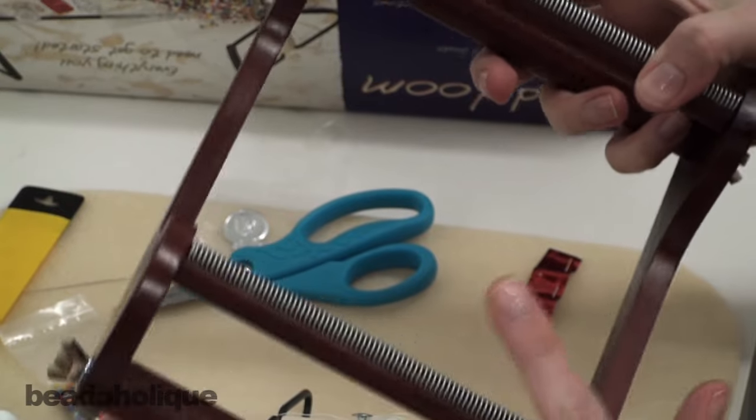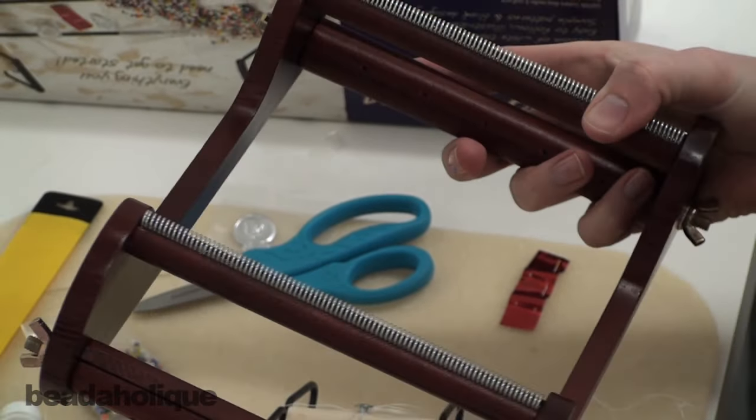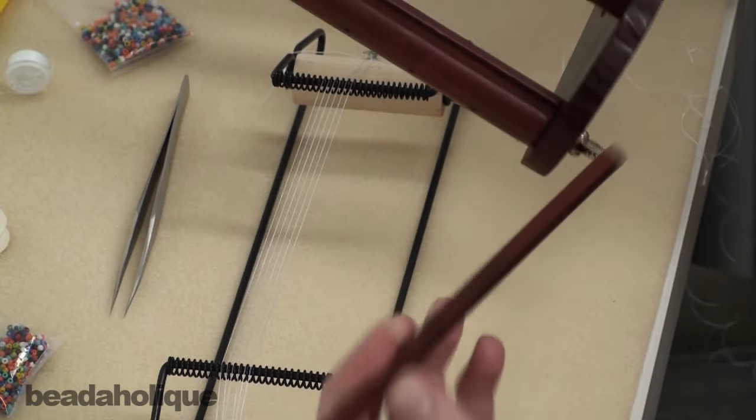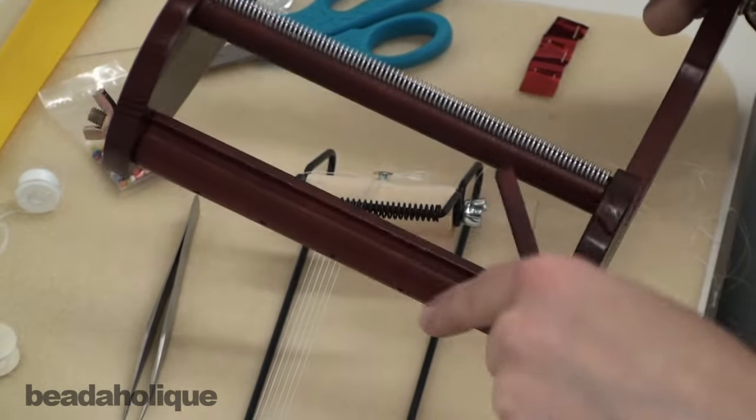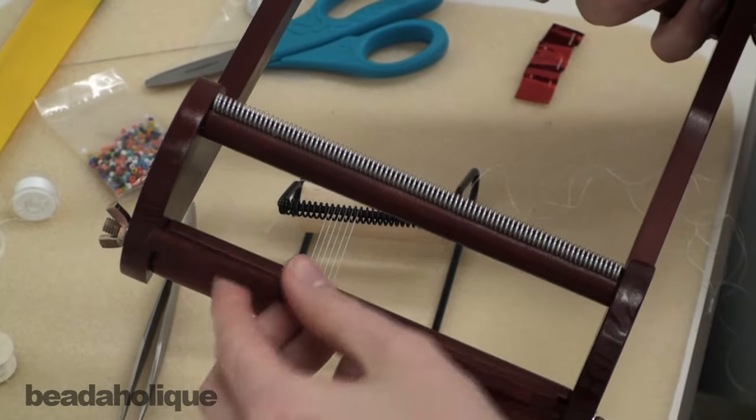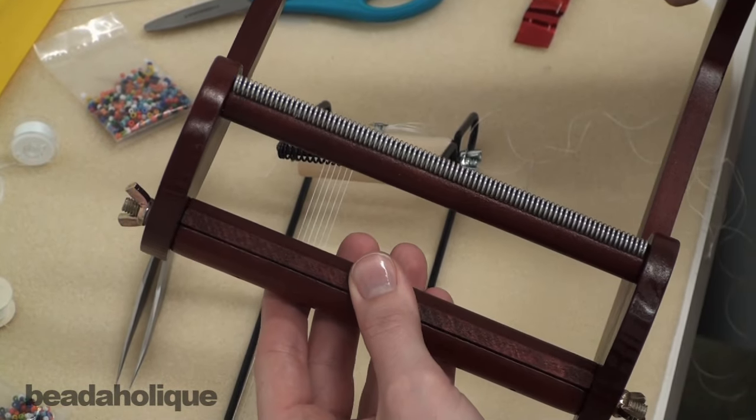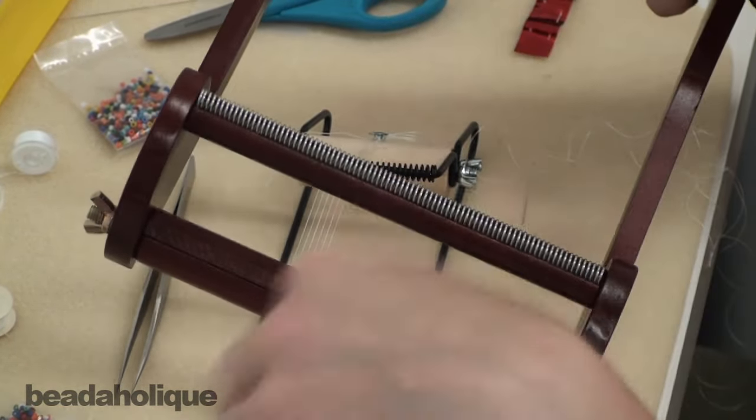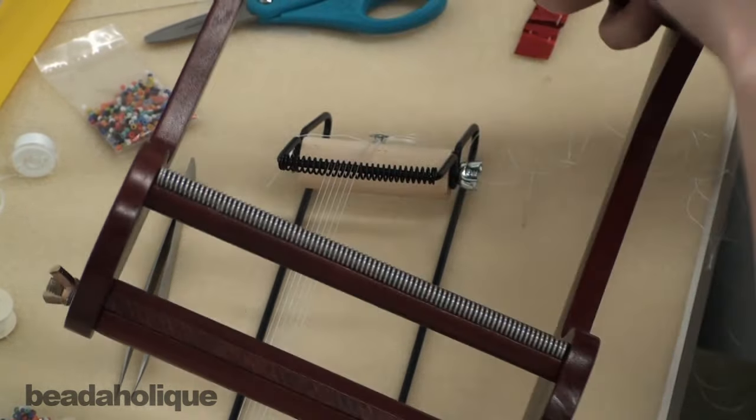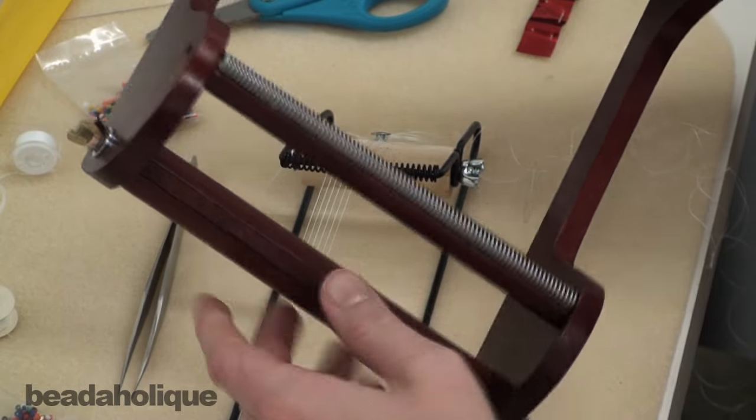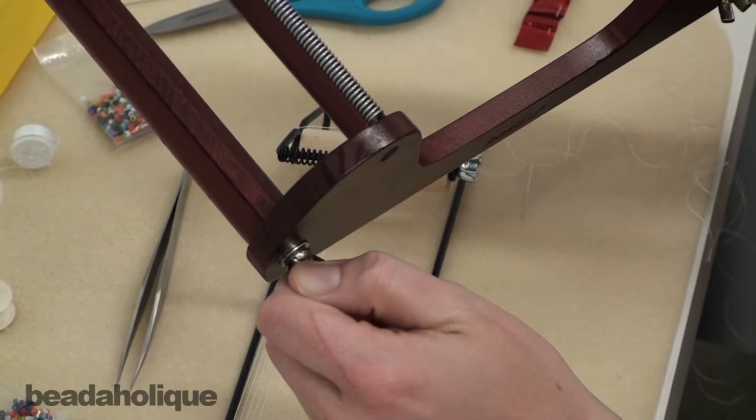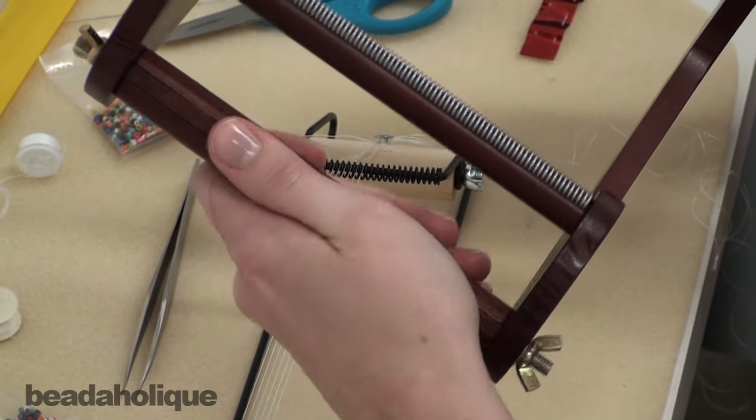To thread this style of loom, it doesn't have the little nail heads. What it has instead is a bar that fits into this dowel. So you would thread this by laying your threads across and then using the bar to secure them. So you wouldn't be able to do the super quick method on this one just going around that nail head. You would just need to cut lengths for this one. Lay them across, put the bar down to secure them, and then it's just the same principle of loosening that screw and turn this to tighten.